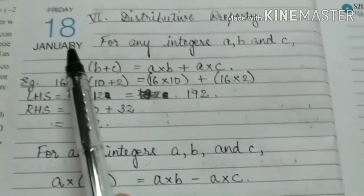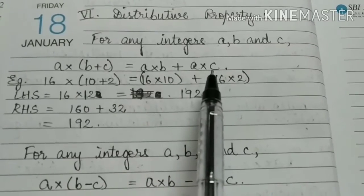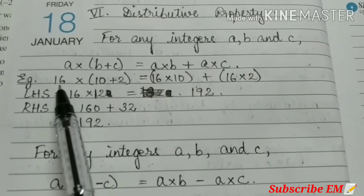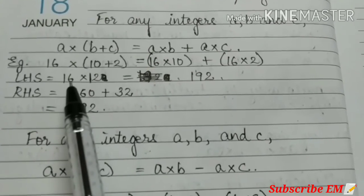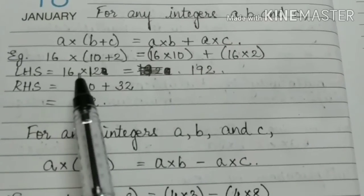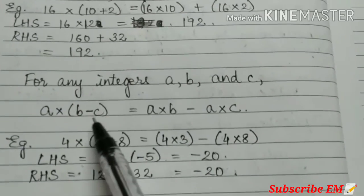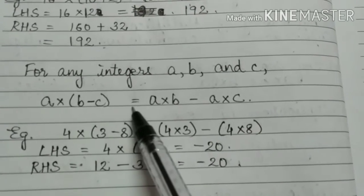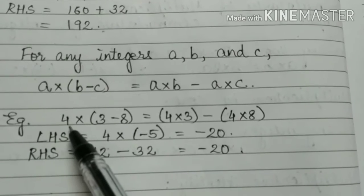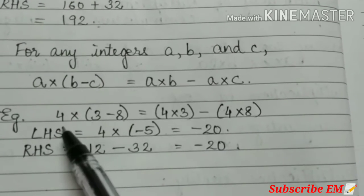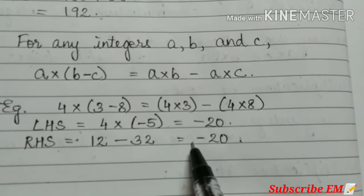Last one is distributive property. A into B plus C is equal to A into B plus A into C. Here you can see, 16 into 10 plus 2 is equal to 16 into 10 plus 16 into 2. So, we can solve LHS and RHS. LHS we get 192. RHS also 192. Like that for subtraction, A into B minus C is equal to A into B minus A into C. Here I have taken simple example. 4 into 3 minus 8 equal to 4 into 3 minus 4 into 8. You can solve LHS and RHS. And we get same answer that is minus 20.